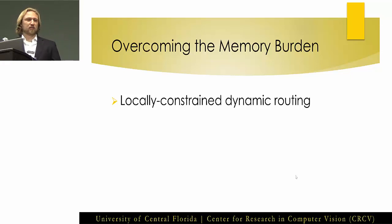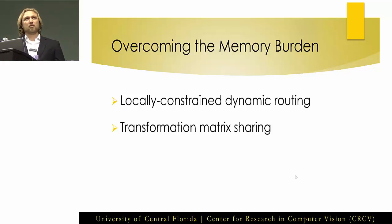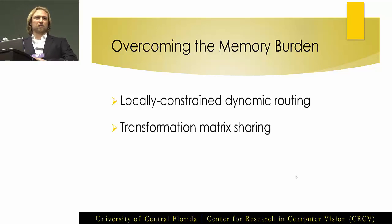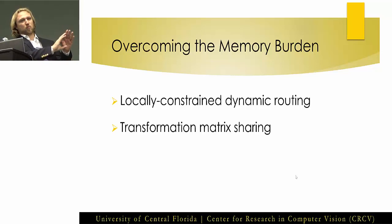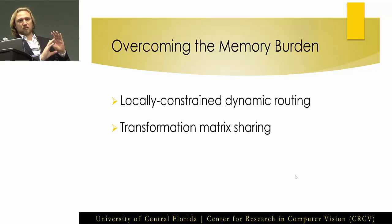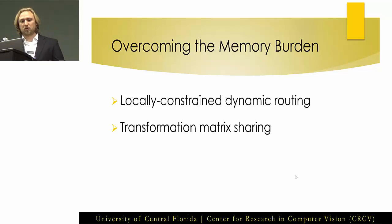The second novelty is transformation matrix sharing. In this way every parent capsule still has a unique transformation, but child capsules share transformation matrices across spatial locations. So when we're trying to encode where the roof of the house is, we share that feature vector transforming roof to the parent of house spatially — the same thing we do with convolutional networks. These two things added to convolutions help with memory a lot.